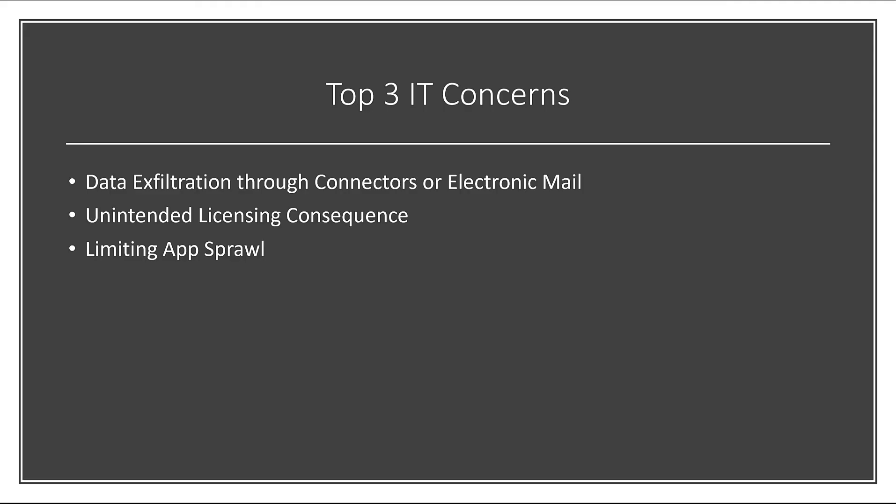When I discuss governance with large enterprise customers, they bring up a lot of different issues, but it basically boils down to three things. The first is data exfiltration. They want to make sure, if they enable this platform, that applications built on it cannot allow data to leave their organization unless they're able to monitor the data and how it's being used. The two ways this might occur are: first, using the connector infrastructure against external systems, or second, using electronic mail to push data out through an email message.